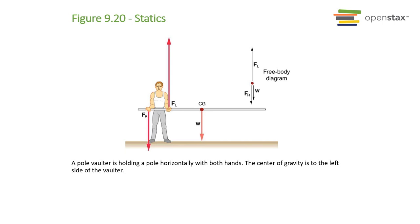In this example, because the pivot point, or the fulcrum, is not at the center of gravity, we must include the weight of the pole in the torque equations.